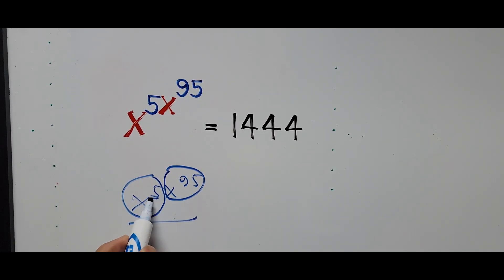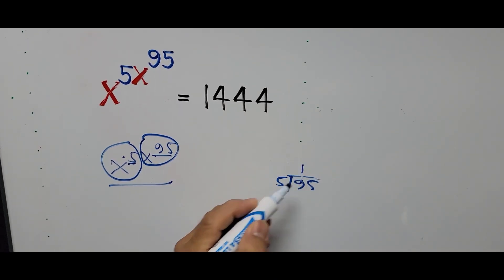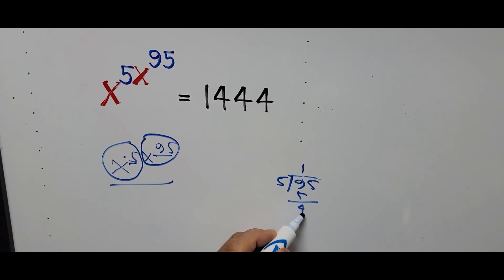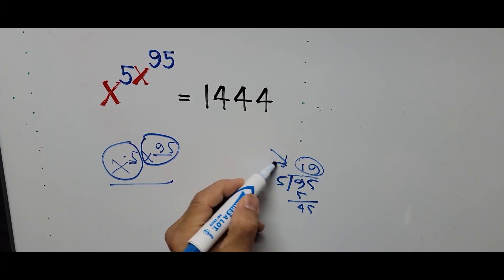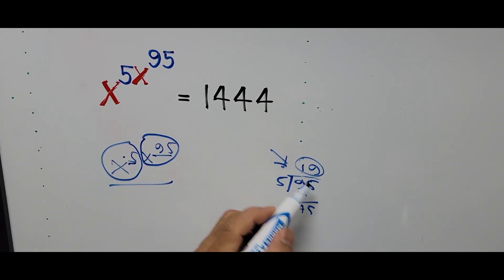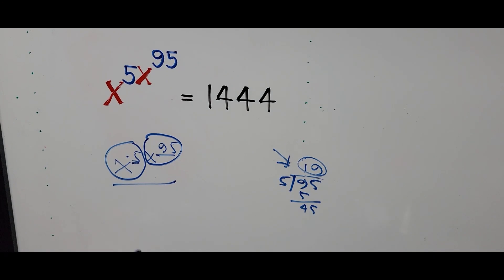So that is 95 divided by 5. That is 1 times 5 is 5, bring down 4, 45, so that's 19. So we have to multiply 5 to 19. The equation now becomes...